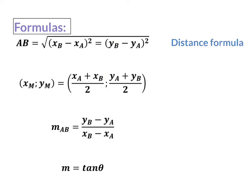Firstly, we have our distance formula. With this formula, you can calculate the length of a side, and that means you can also prove that two sides are equal in length, which can then be useful if you are working with a specific type of triangle or a specific type of quadrilateral.